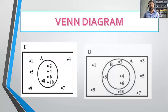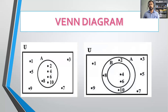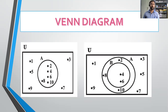One more example using the same setup. Here we consider two sets. The universal set again contains all integers from one to 10. A is the set of all even integers — two, four, six, eight — and B is the set of four and six only. Very clearly you can see that B is a subset of both A and U.